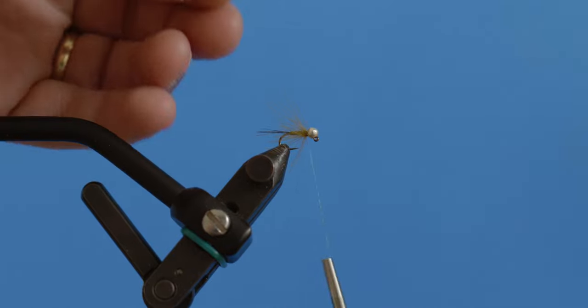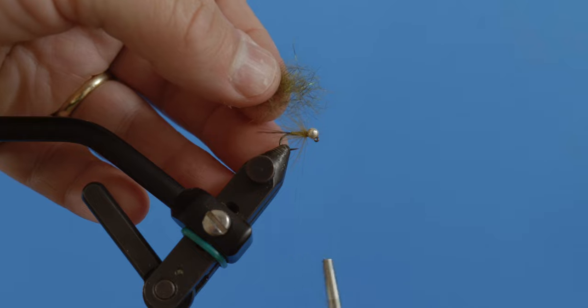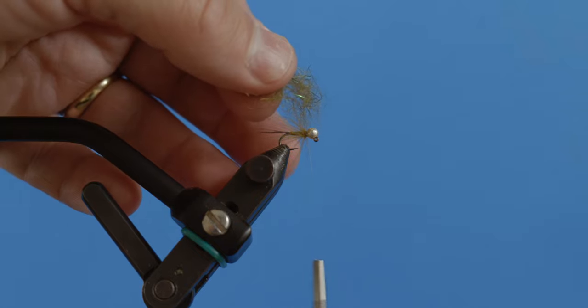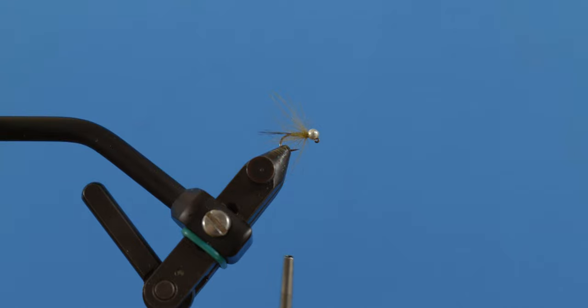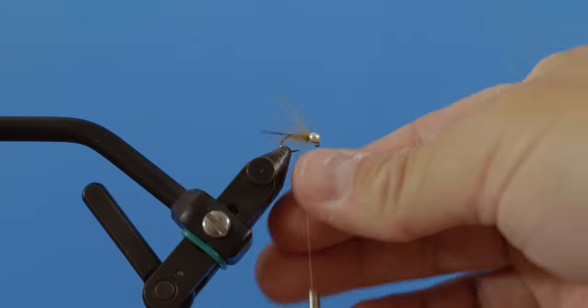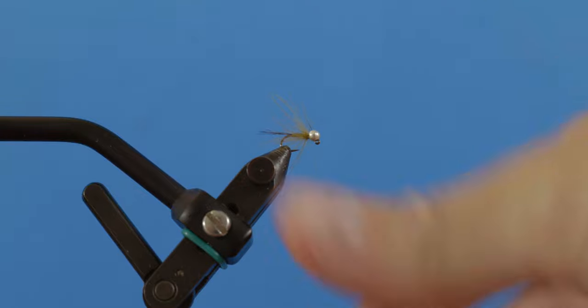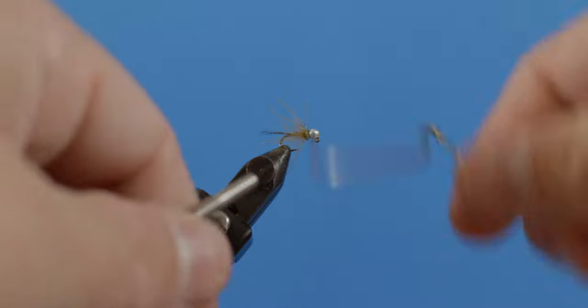Now I've got some UV Tracer Squirrel Dub, it's called UV Squirrel Dub Flash Dub. This is a medium olive color. I'm just going to take a tiny little pinch of that, add that to the front. This just creates a little bit of contrast and create our collar.